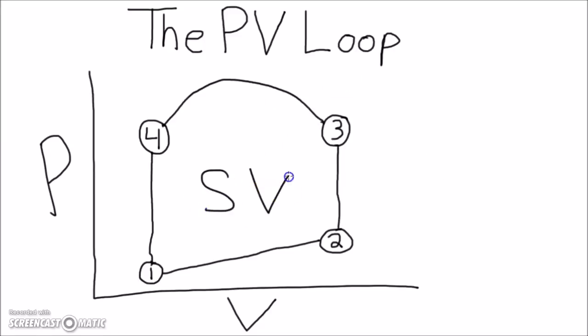The area in the graph indicates the work done by the heart, or the stroke volume. Now, let's label the segments.